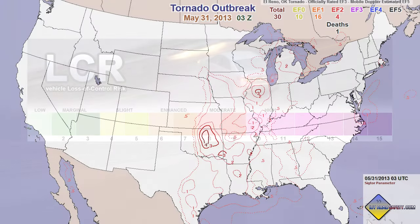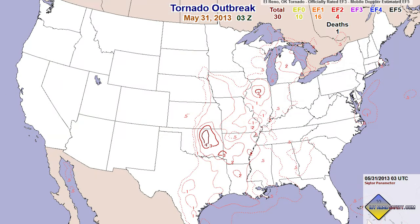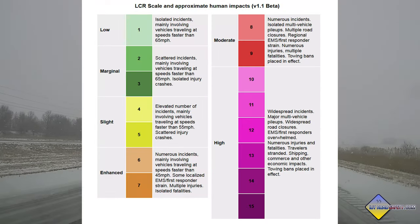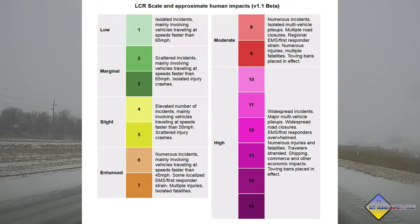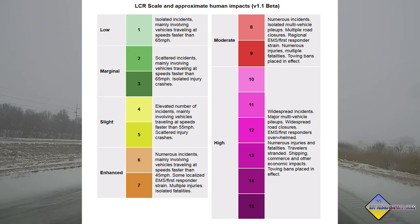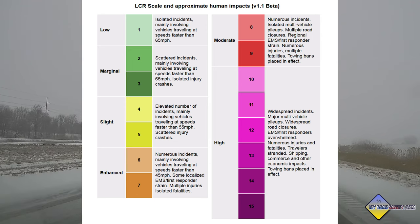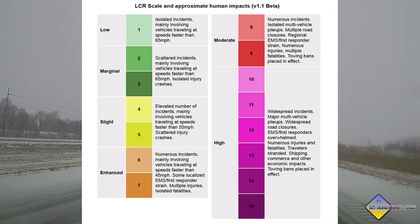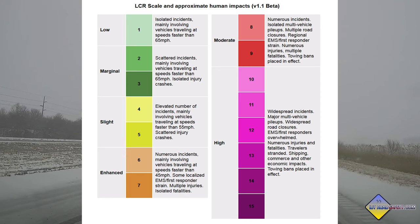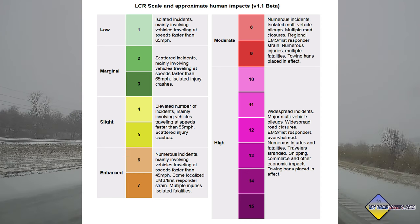If you're a weather nerd like me, you know we have forecasting parameters for other types of weather hazards. For instance, the Significant Tornado Parameter, or STP for tornadoes. LCR is a similar scale for showing the risk to a driver of losing control of a vehicle from icy roads. The higher the LCR value, the greater the risk is to someone operating a motor vehicle in that area.